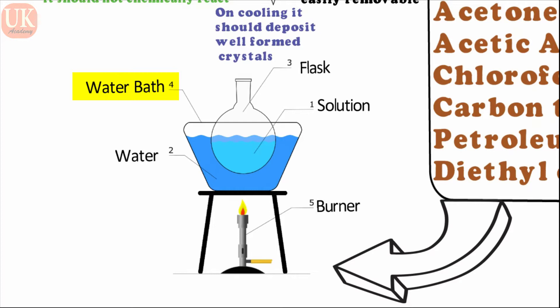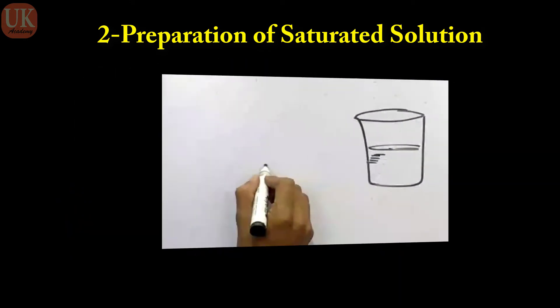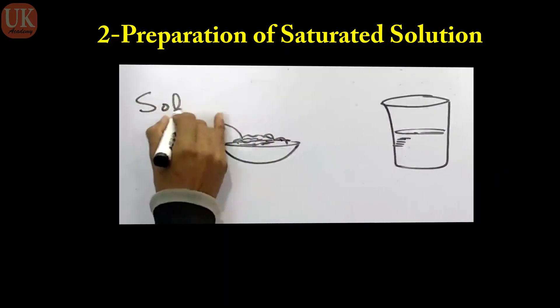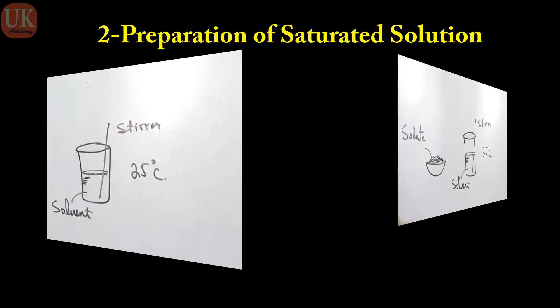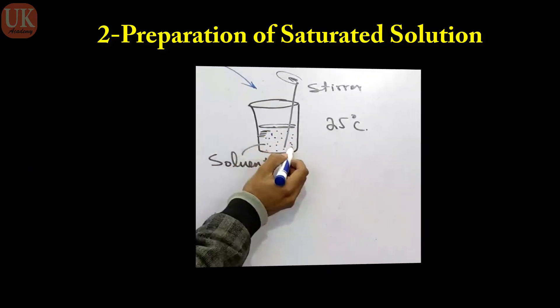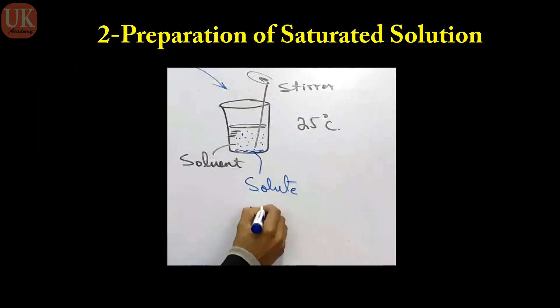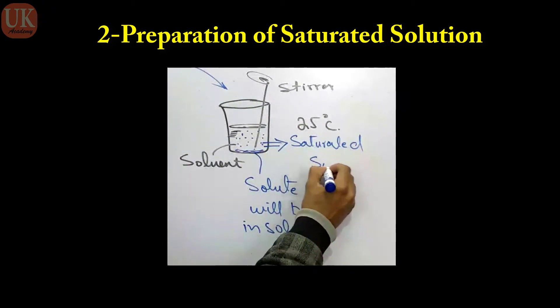The next step in the crystallization process is the preparation of a saturated solution. We take a beaker and dissolve a specific amount of solute in an appropriate amount of solvent. We need to warm this solution. If our solvent is volatile, then we need to use a water bath.